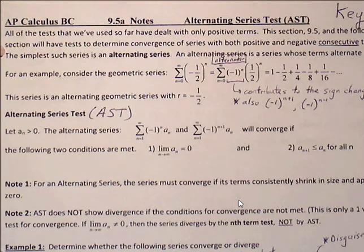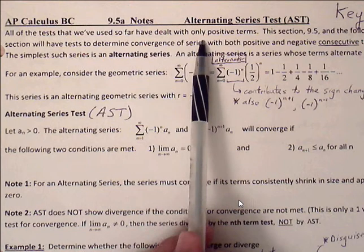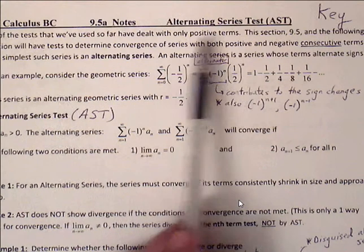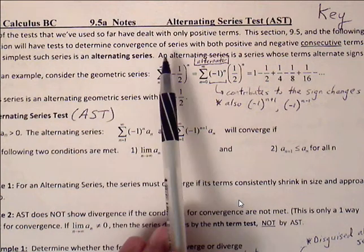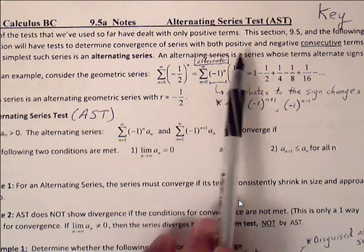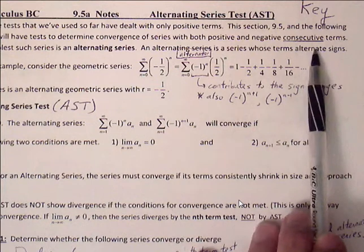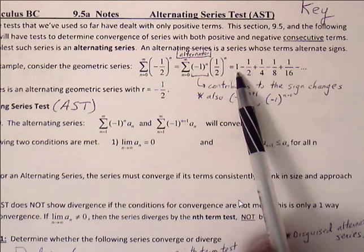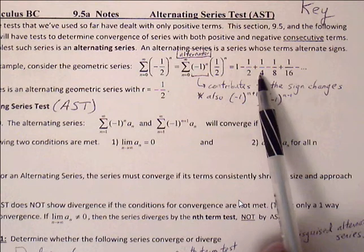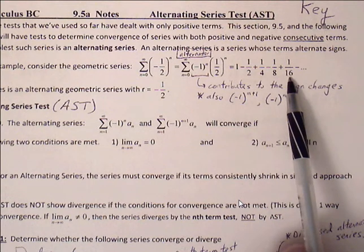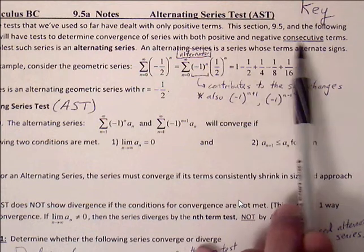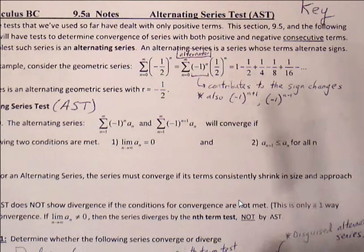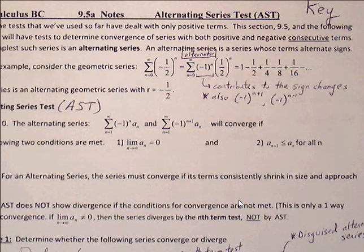All the tests we've used so far have dealt with only positive terms. The following sections will have tests to determine the convergence of series with both positive and negative consecutive terms. For example: 1, negative 1/2, positive 1/4, negative 1/8, positive 1/16. Two positives followed by two negatives would not fall under alternating series — it needs to be alternating signs on consecutive terms.